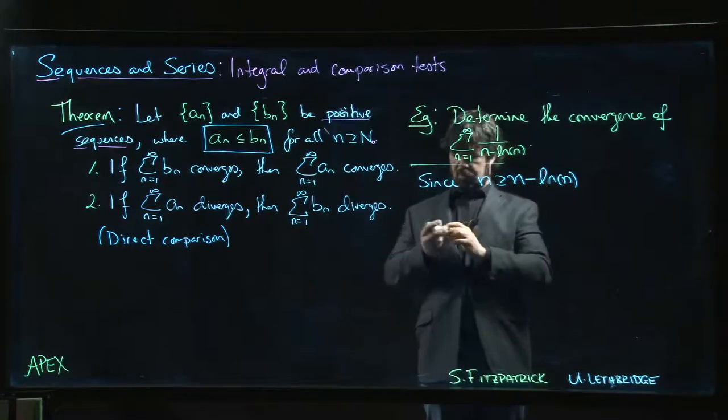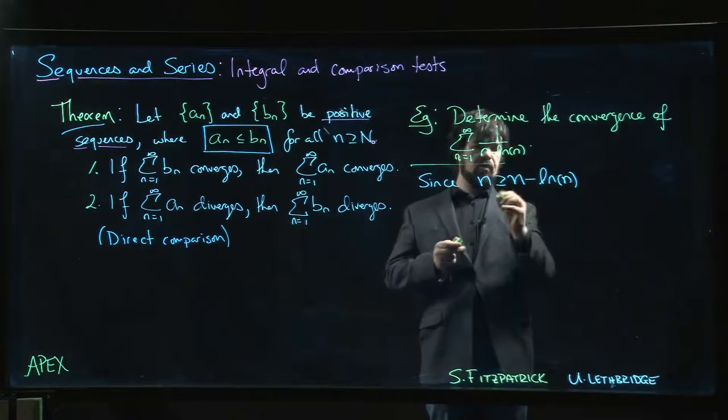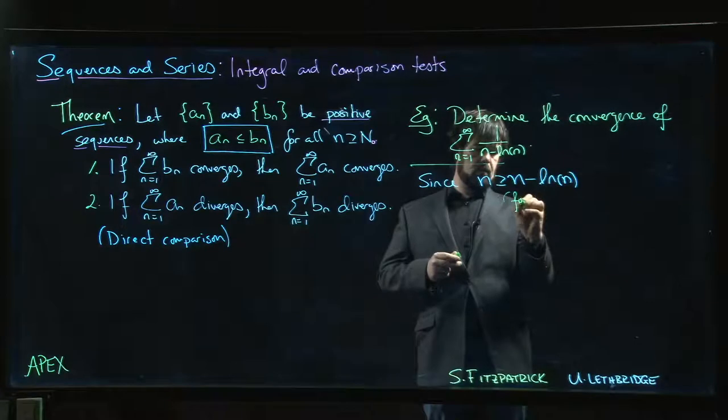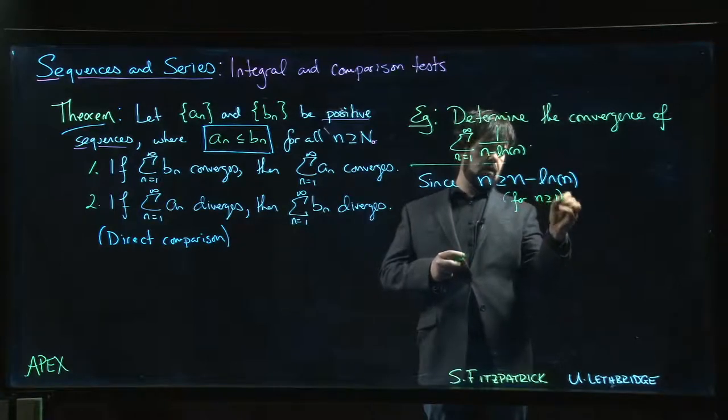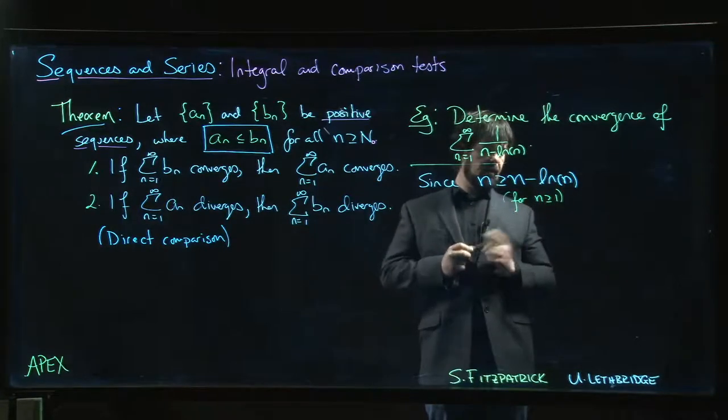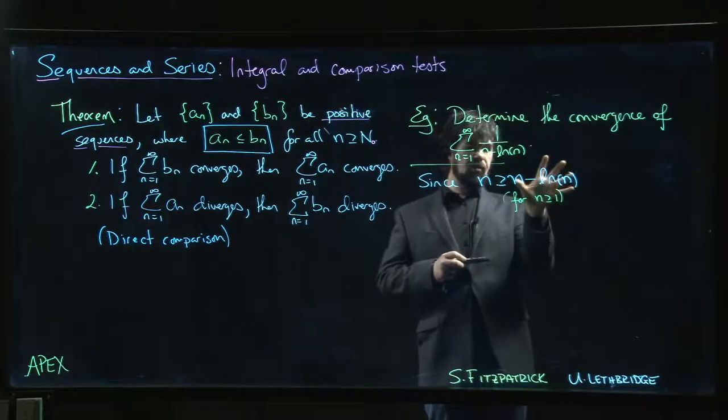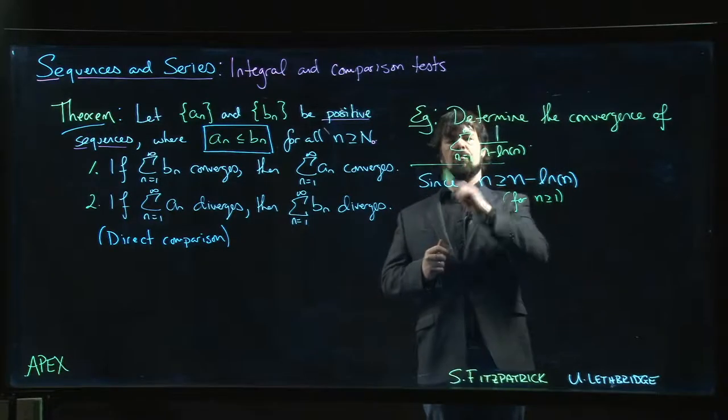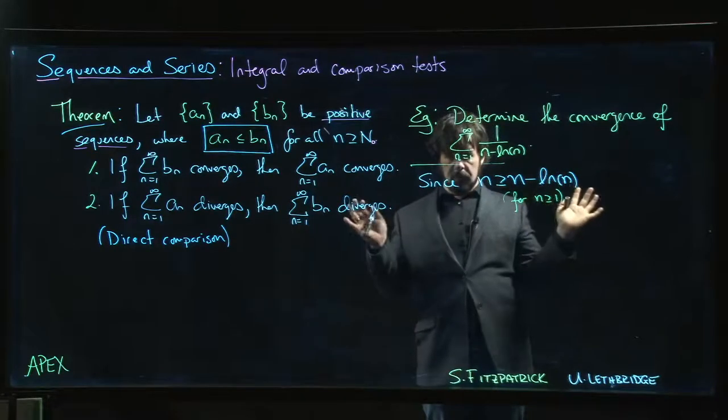We're working here. Let's point out this is valid for n bigger than or equal to 1, right? If n is less than 1, then the natural log is negative, and this side would actually be bigger. But n is bigger than or equal to 1, so we don't have to worry.